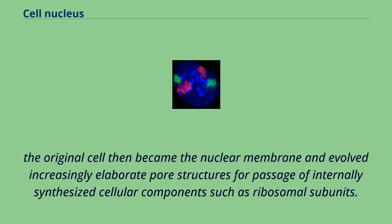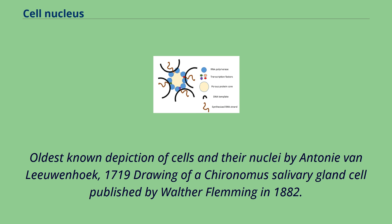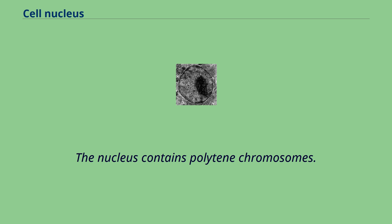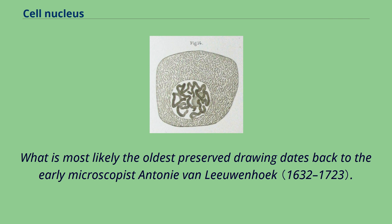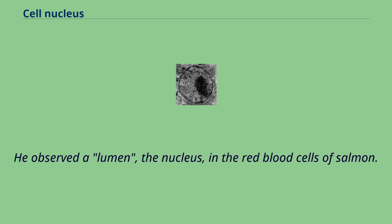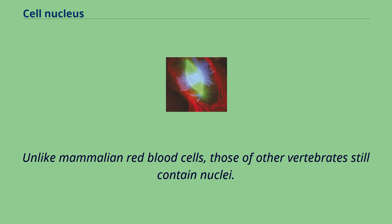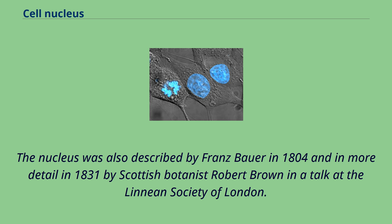Oldest known depiction of cells and their nuclei by Antonie van Leeuwenhoek — a 1719 drawing of a chironomus salivary gland cell published by Walther Flemming in 1882. The nucleus contains polytene chromosomes. The nucleus was the first organelle to be discovered. What is most likely the oldest preserved drawing dates back to the early microscopist Antonie van Leeuwenhoek, who observed the lumen — the nucleus — in the red blood cells of salmon. Unlike mammalian red blood cells, those of other vertebrates still contain nuclei. The nucleus was also described by Franz Bauer in 1804, and in more detail in 1831 by Scottish botanist Robert Brown in a talk at the Linnaean Society of London. Brown was studying orchids under the microscope when he observed an opaque area, which he called the areola or nucleus, in the cells of the flower's outer layer. He did not suggest a potential function.